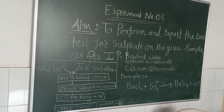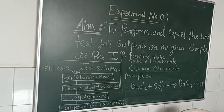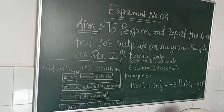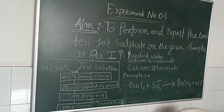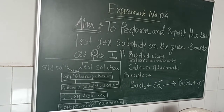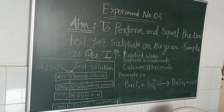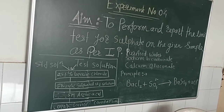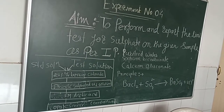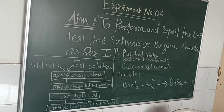Good afternoon one and all. Today we are going to perform experiment number 4 of pharmaceutical chemistry 1. The aim of the experiment is to perform and report the limit test for sulfate on the given sample as per IP — determining the limit test in purified water, sodium bicarbonate, and calcium gluconate solution.